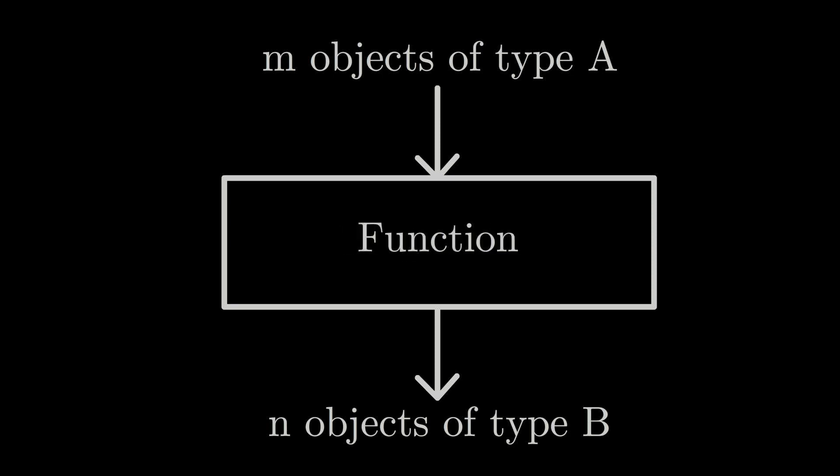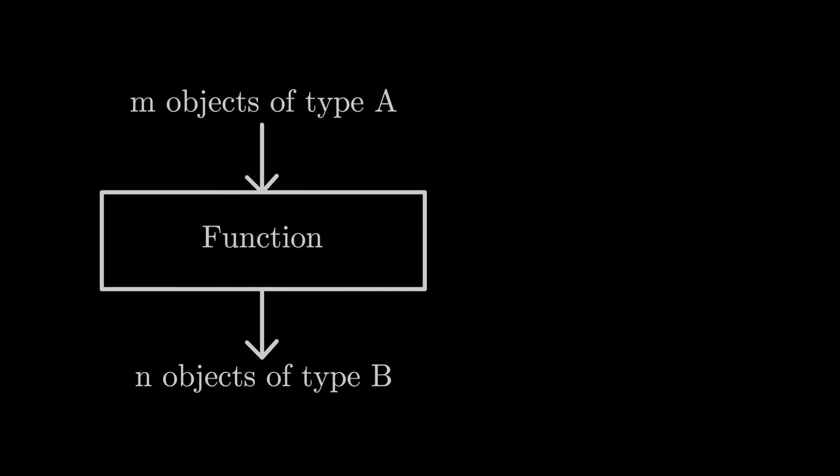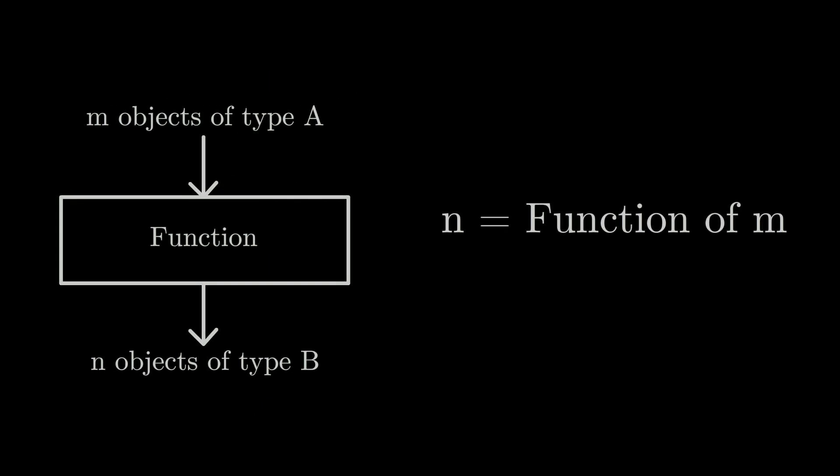A function takes in one particular number and gives out something else, which may or may not be the number that you put inside the magic box. In this case, we can say that N is a function of M. Or if we put the value of M inside the function, we get a value of N. In more mathematical terms, we would express this function as N equals F of M, or N is a function of M.